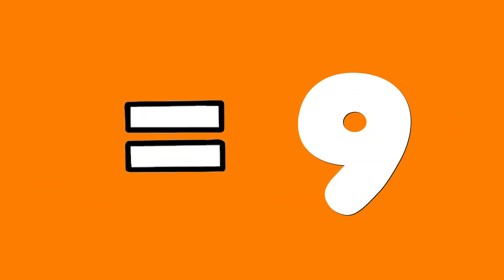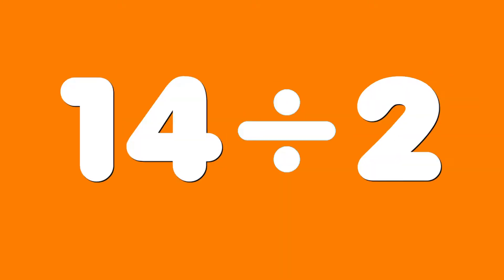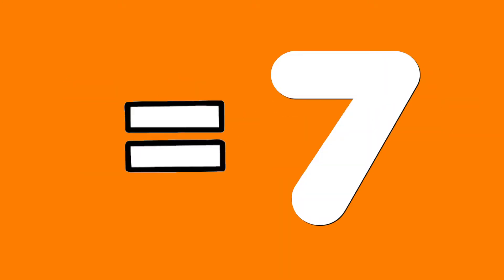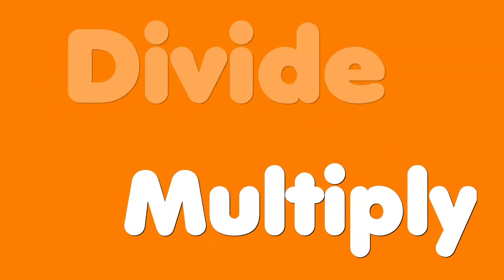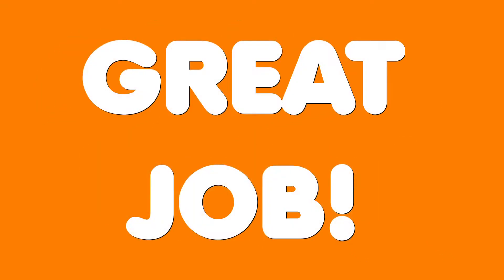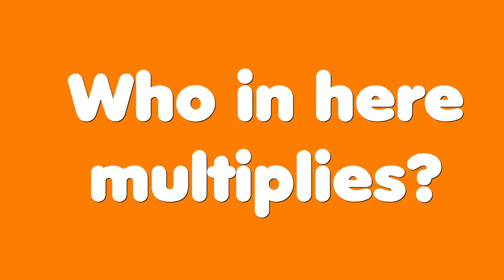Two out of twenty equals ten, two out of eighteen is nine again. Two out of sixteen is eight, oh wait. Two out of fourteen equals seven, two out of twelve equals six — that's the trick. You just learned how to divide and multiply real quick.